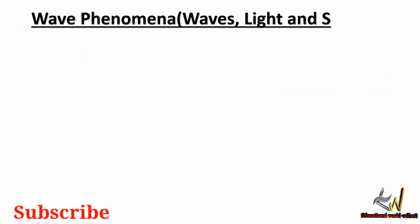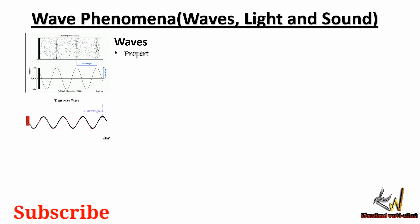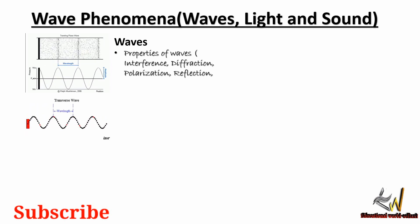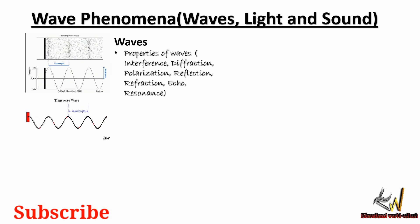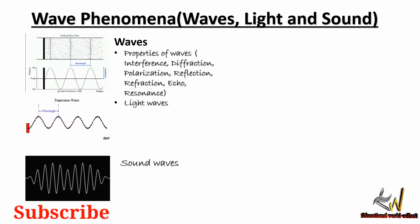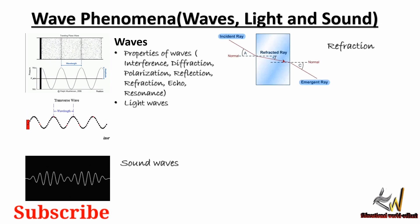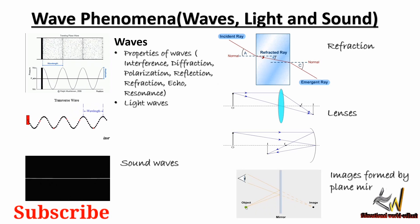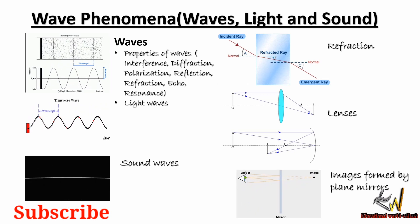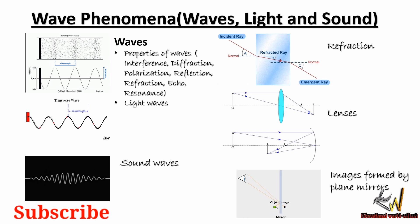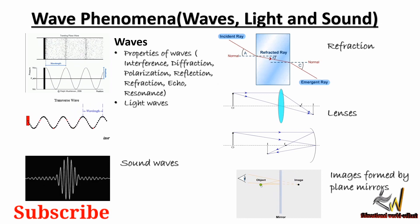We have the wave phenomena, which includes all types of waves, light, and sound. Under waves, we have the properties of waves which include interference, diffraction, polarization, reflection, refraction, echo, and resonance. You should be able to answer questions on refraction, lenses and curved mirrors, and images formed by a plane mirror.